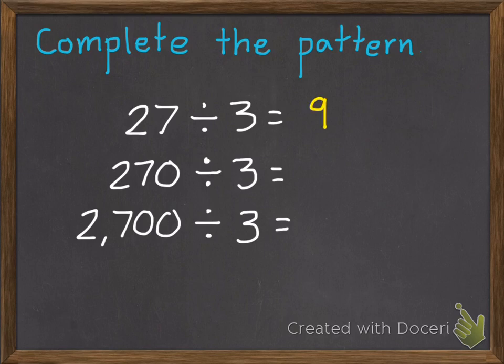Once you have the first one, the rest are easy. So, we have a 0 in our 270, which makes it 10 times greater than 27. So we're going to have a 9 with a 0, 90.